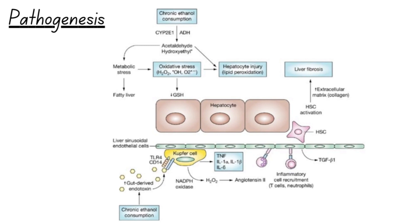Chronic alcohol consumption also increases gut permeability, allowing endotoxins to enter the bloodstream. These endotoxins activate Kupffer cells in the liver, resulting in the production of cytokines such as TNF-alpha. These cytokines contribute to hepatocyte damage and activate the stellate cells, initiating the process of liver fibrosis.